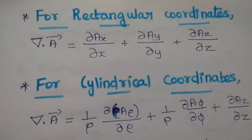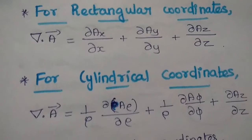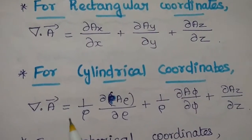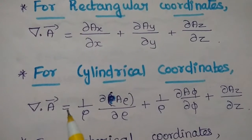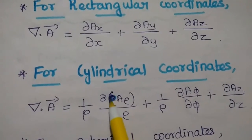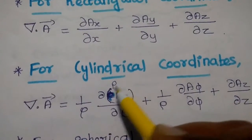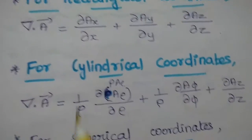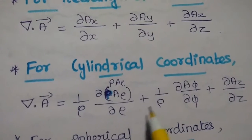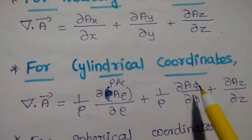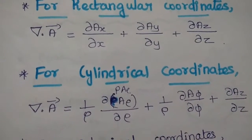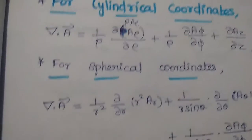Likewise, for the cylindrical coordinate system, the divergence can be written as: del dot A vector is equal to (1/ρ) ∂(ρ·Aρ)/∂ρ + (1/ρ) ∂Aφ/∂φ + ∂Az/∂z. This is the divergence formula for the cylindrical coordinate system.